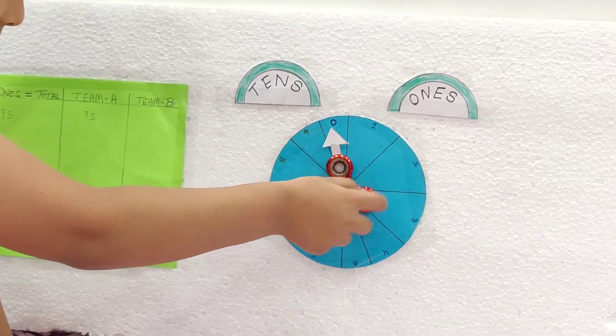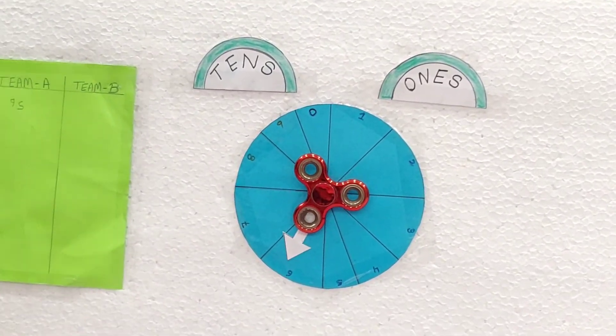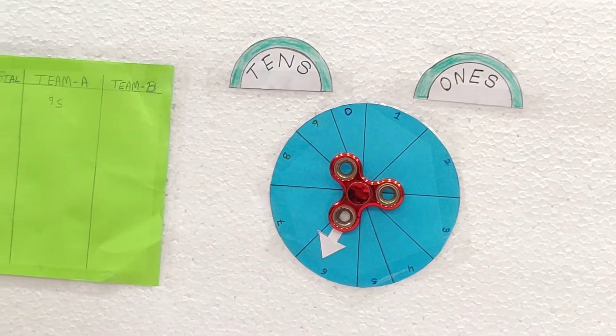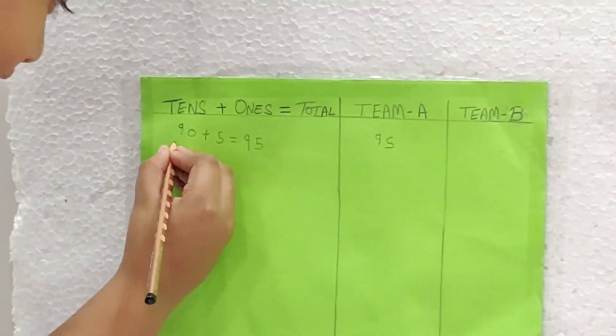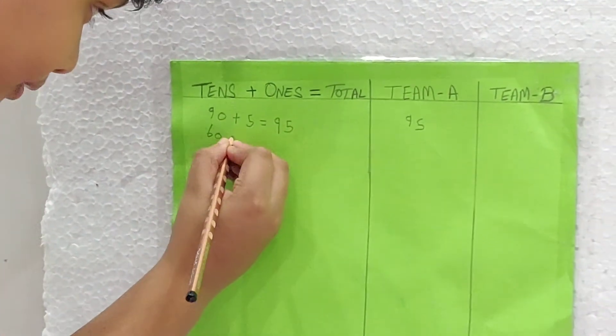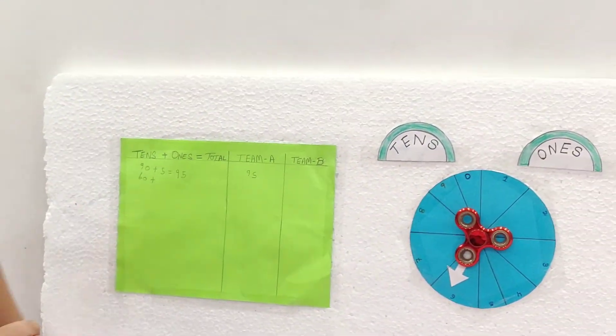Let's spin our wheel. This time we got number 6. So it will be 60. Plus we will do the sign also. Plus sign.